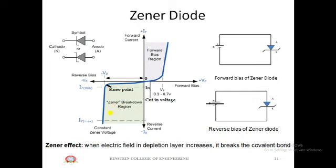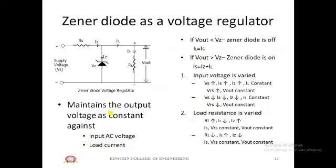Because of this, the Zener diode is applied as a voltage regulator, as a fixed reference voltage in power supplies, and as a clipper in wave shaping circuits. As a voltage regulator, it maintains the output voltage of a DC power supply at a constant value even when the input AC voltage and load vary.